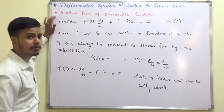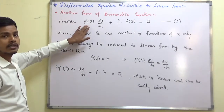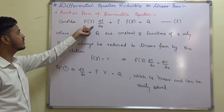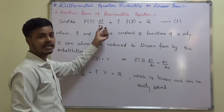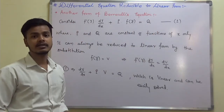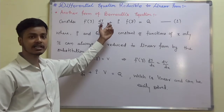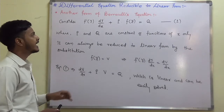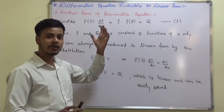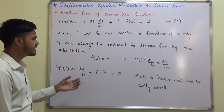Let us see what this another form of Bernoulli's equation is. Consider a differential equation of the form f'(y)·dy/dx + p·f(y) = q, where p and q are functions of x only, or they may be constants. This is the another form of Bernoulli's differential equation, and like the first form, this can also be reduced to a linear form by making a substitution.